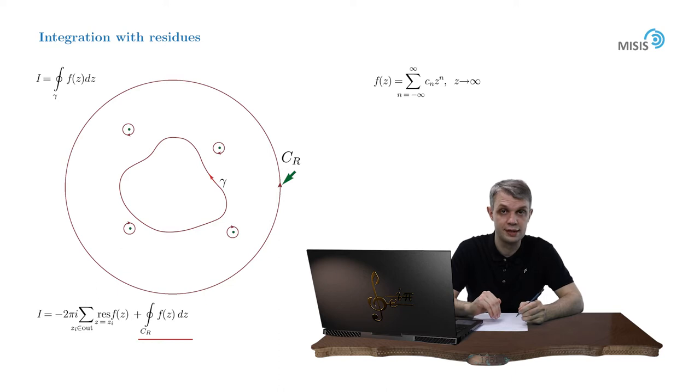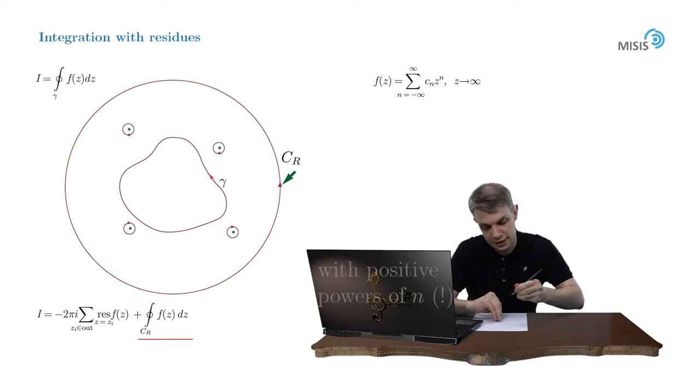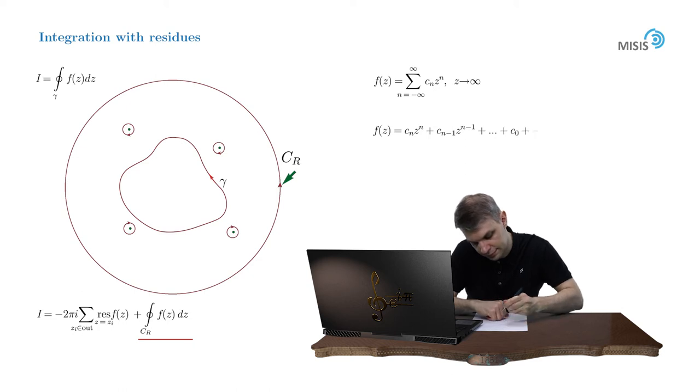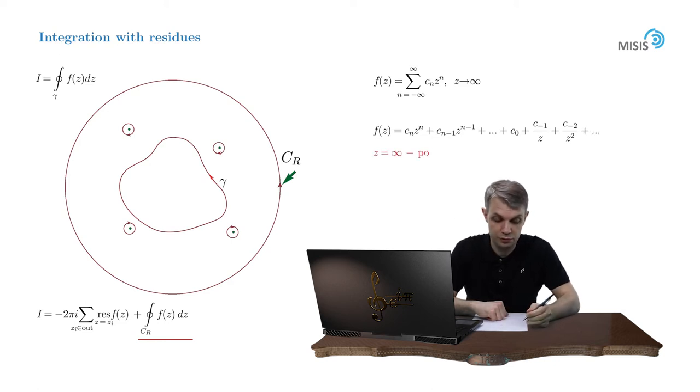So now, if this expression has only a finite amount of terms, so it looks like c_n times z^n plus c_{n-1} times z to the power of n minus 1, and so on, then they say that the function has a pole of order n at infinity.